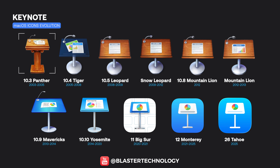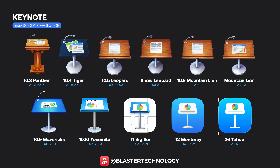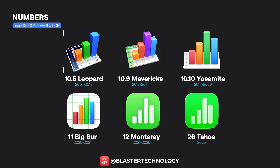The Keynote icon started as a realistic wooden lectern but was refined further until it was brought to a minimalist square shape. The Numbers icon debuted with detailed, colorful 3D graphics, remaining the same style until the Monterey release, which used a green background and transparent white graphics. macOS 26 Tahoe simply adapted it to the new liquid glass style.